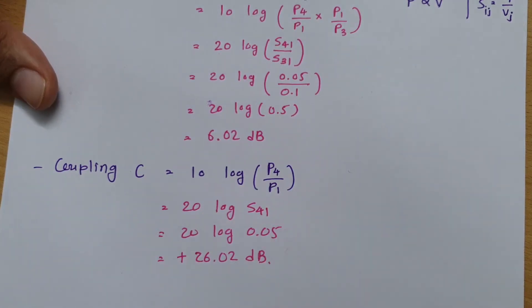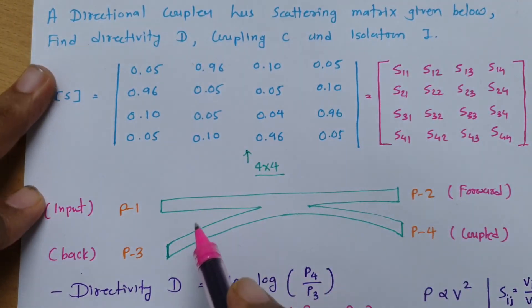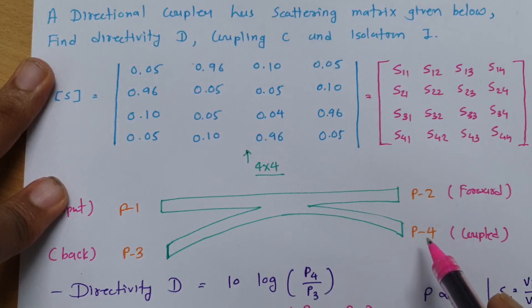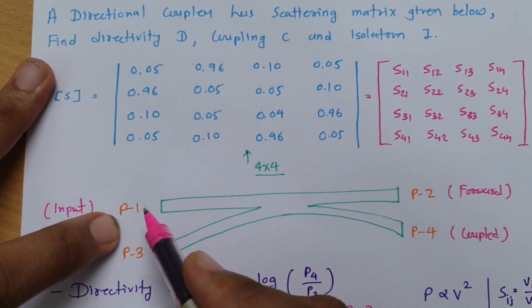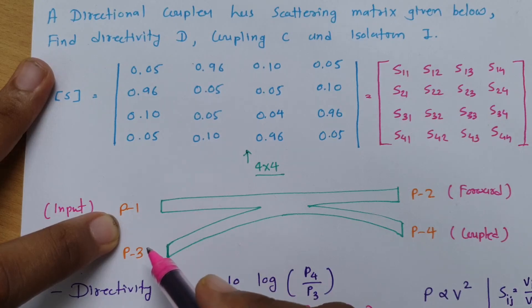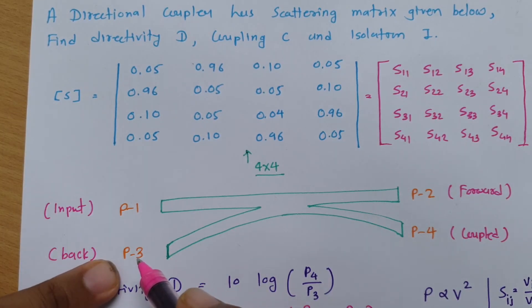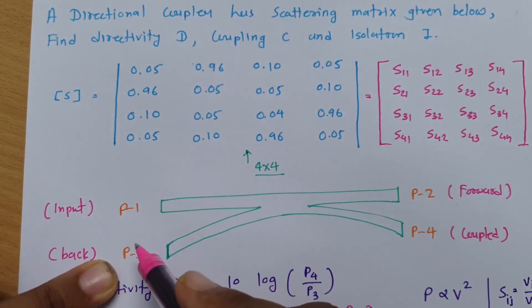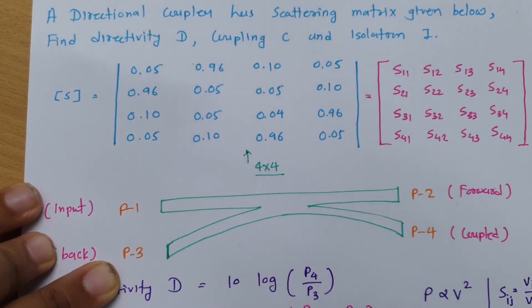The third data we are dealing with to calculate is isolation. In this directional coupler, P1 and P3, as well as P2 and P4, are isolated from each other. If P1 and P3 are isolated from each other and I am giving input to P1, then output at P3 and input at P1 will be isolation I. So isolation I will be 10 log of P3 by P1.